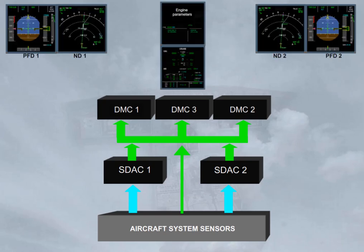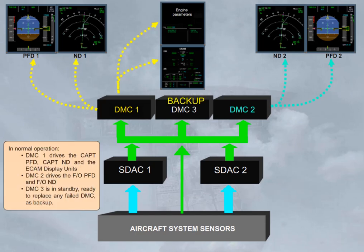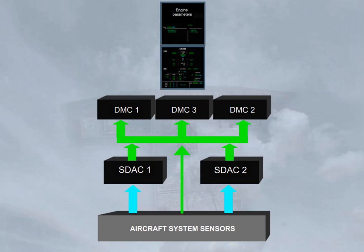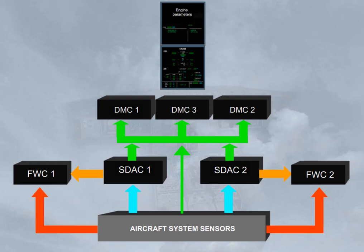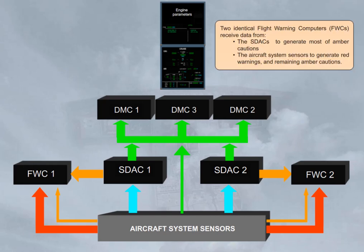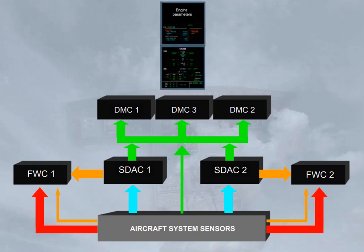In normal operation, DMC-1 drives the captain's PFD, captain's ND, and the ECAM display units. DMC-2 drives the first officer's PFD and first officer's ND. DMC-3 is in standby, ready to replace any failed DMC as backup. Two identical Flight Warning Computers (FWCs) receive data from the SDACs to generate most amber cautions, and from the aircraft system sensors to generate red warnings and remaining amber cautions. The FWCs then supply the DMCs for the display of alert messages.